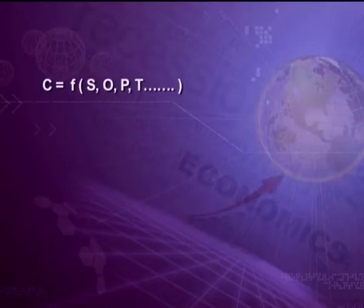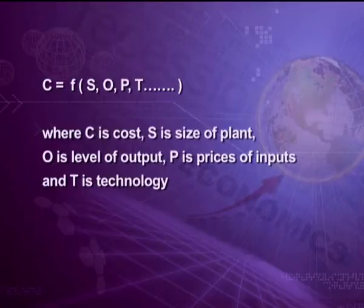There are several factors which influence cost. Symbolically, cost function can be expressed as C = f(S, O, P, T), where C is cost, S is size of plant, O is level of output, P is prices, and T is technology. All these are factors on which the cost of a product depends. This cost function may be formulated for the short run and long run depending upon the requirements of the firm.